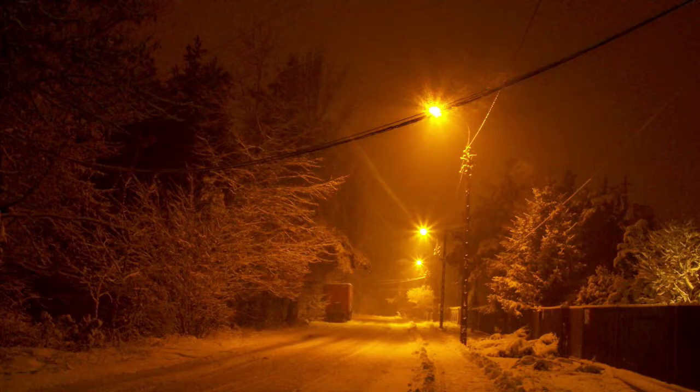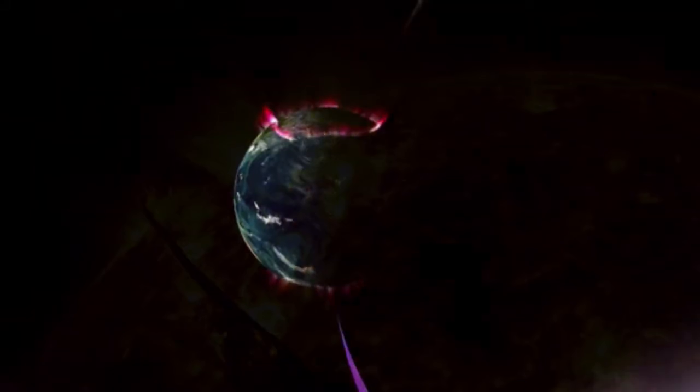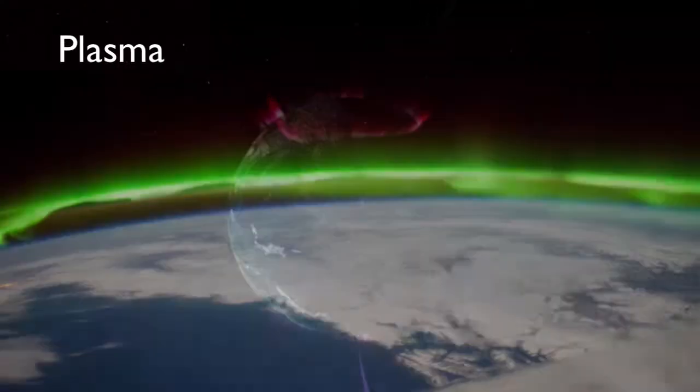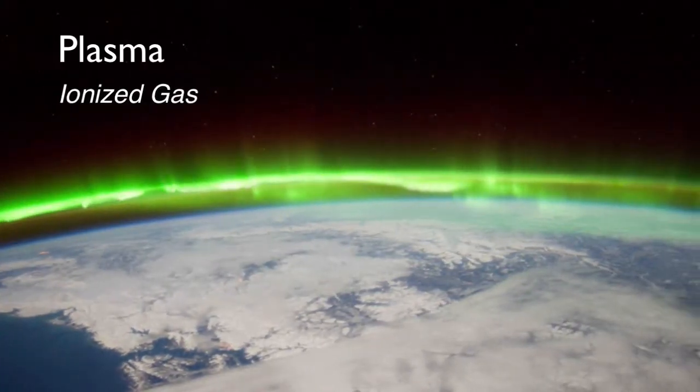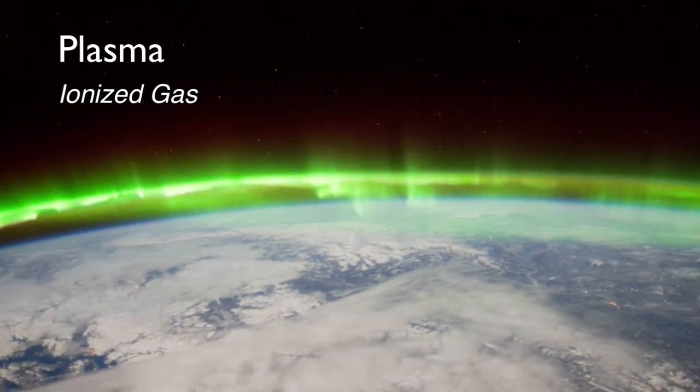Neon signs, fluorescent lights, streetlights, our sun, even the aurora are all made of plasma, neatly described as an ionized gas. Good energy.